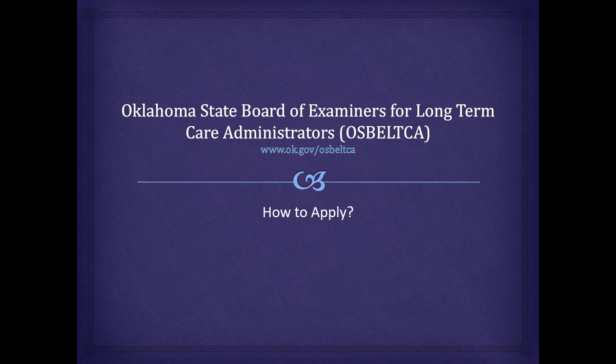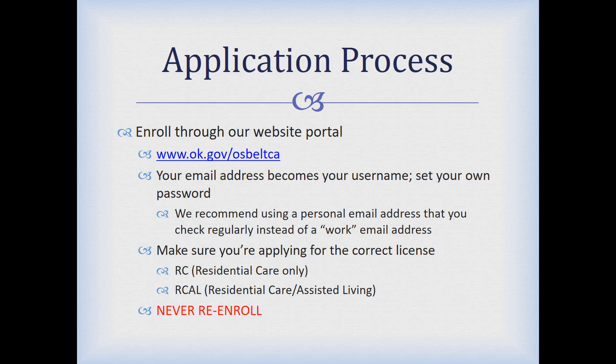To get started, go to our website at www.ok.gov/OSBELTCA — that's O-S-B-E-L-T-C-A. The first thing you're going to do is get into our system, which is what we call enrolling. Here are some of the things you want to keep in mind as you do this.